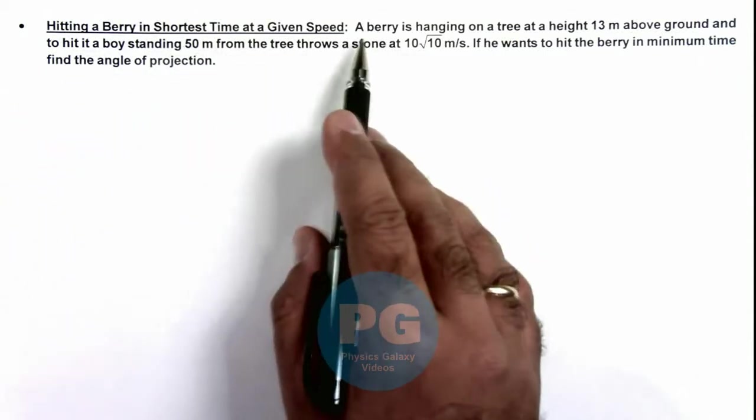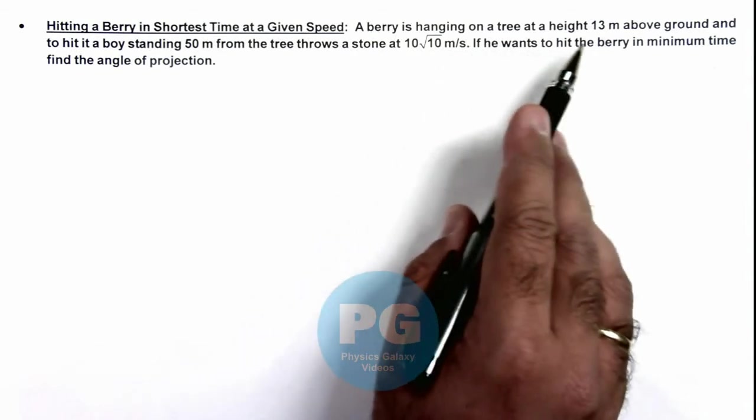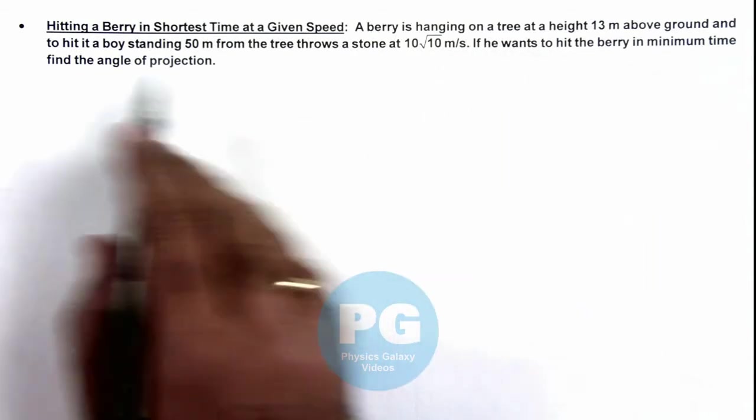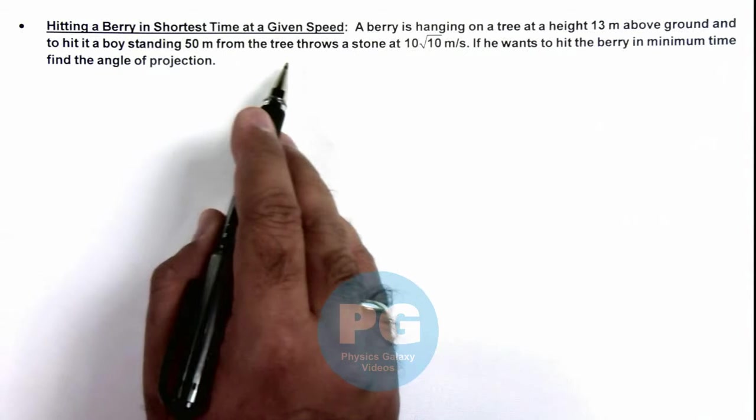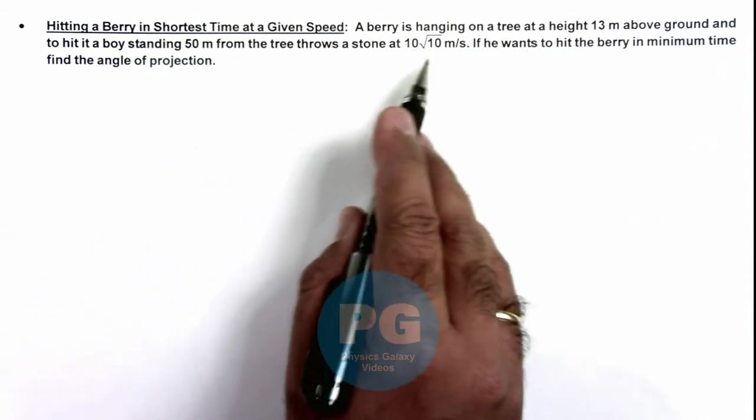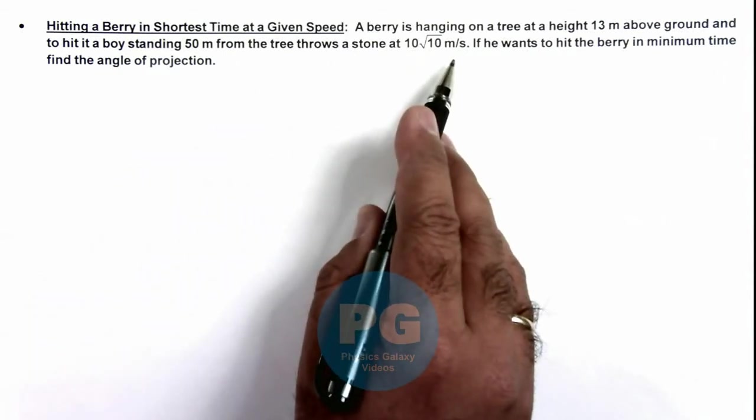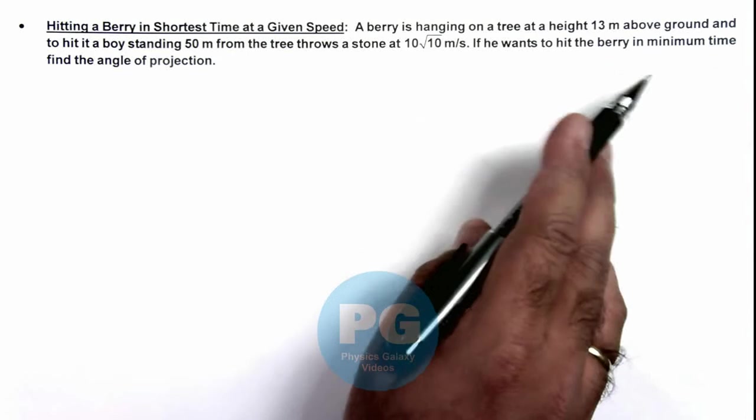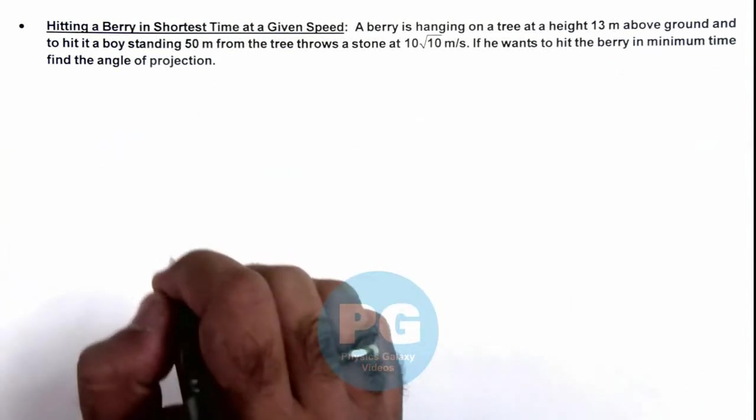We are given that a berry is hanging on a tree at a height 13 meters above ground, and to hit it a boy standing 50 meters from that tree throws a stone at 10 root 10 meters per second. If he wants to hit the berry in minimum time, we are required to find the angle of projection.